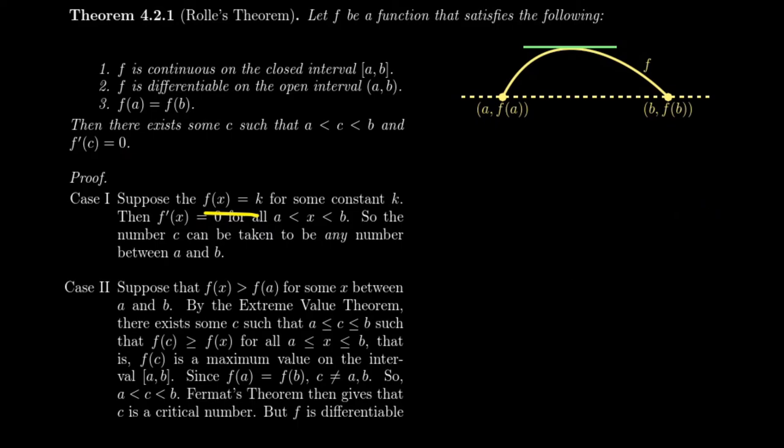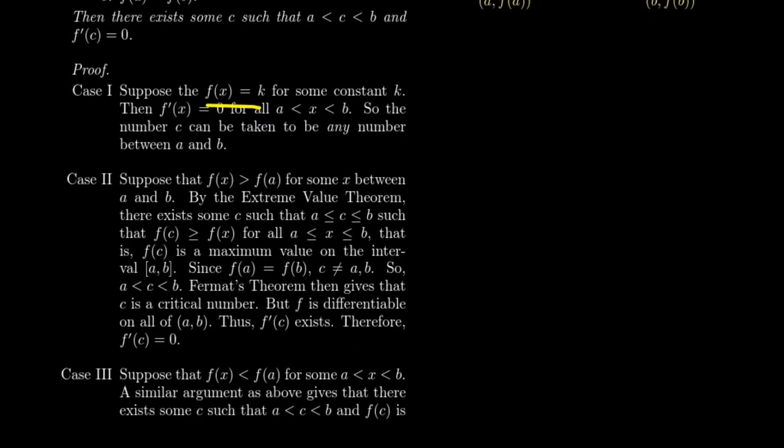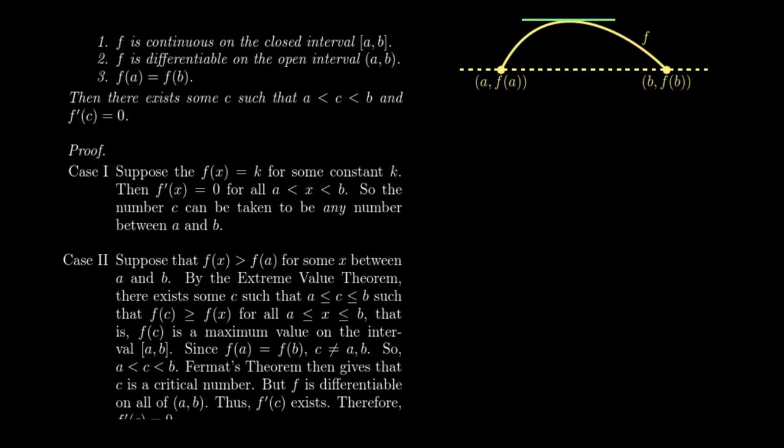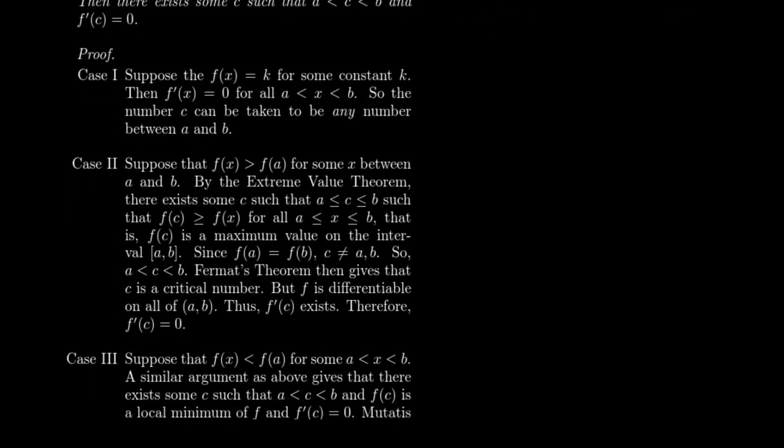The second case is a little bit more interesting. Let's suppose, like our picture suggests, let's suppose that there's some y value between a and b so that it's bigger than f(a). So let's draw that picture for a moment. Let's say that we have here our f(a). We have our f(b). And again, these have the same y value. So this is a horizontal line right here.